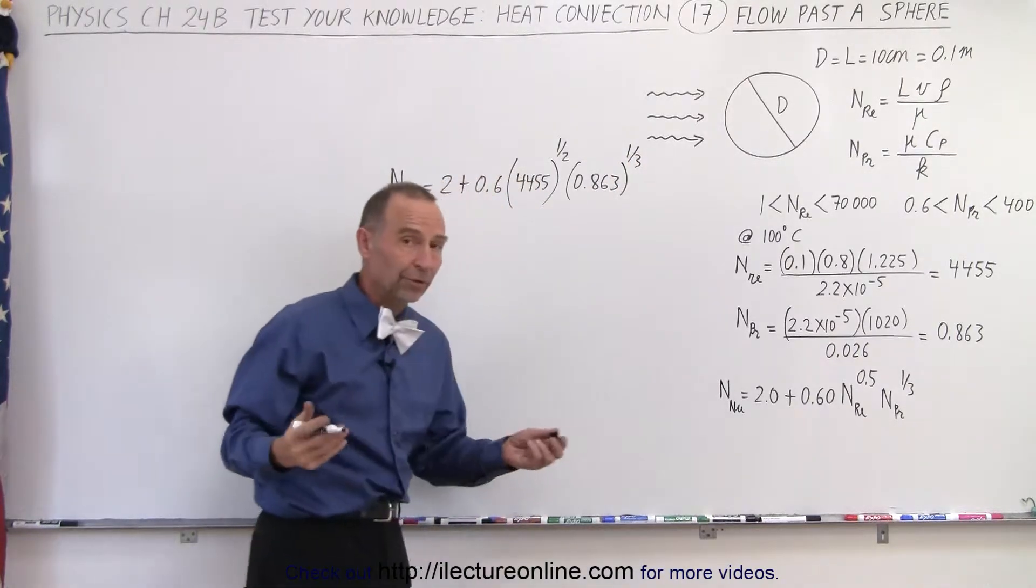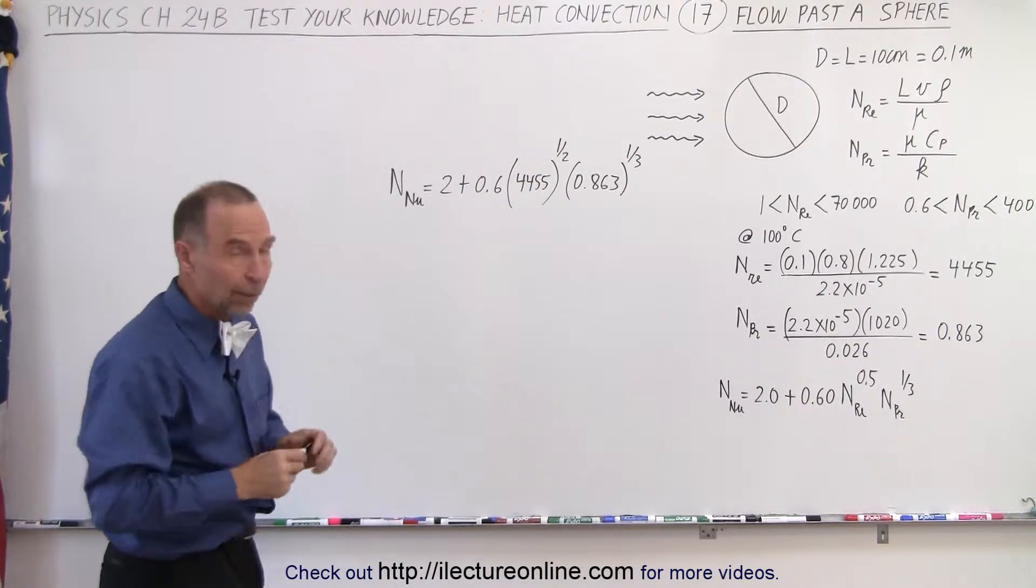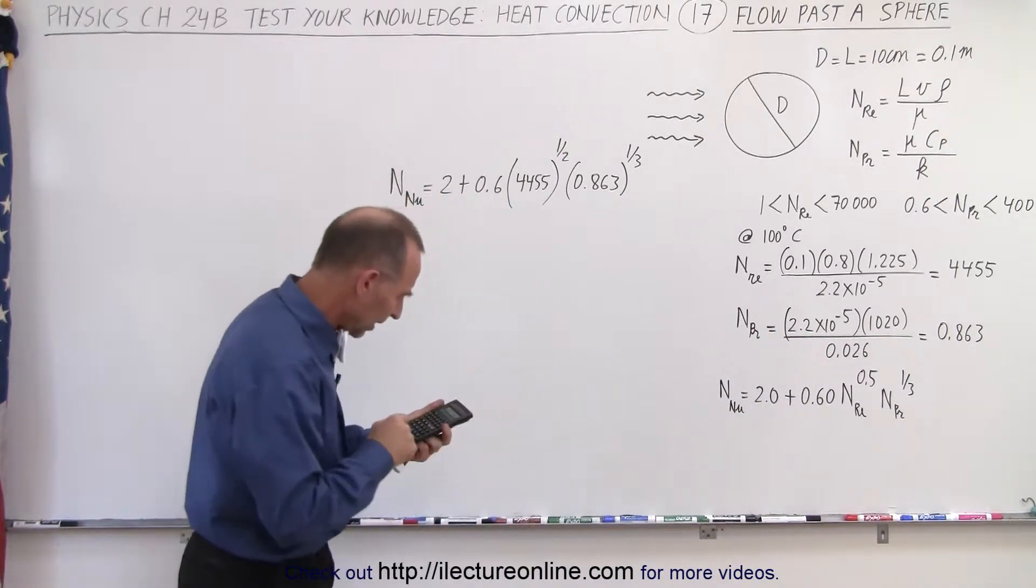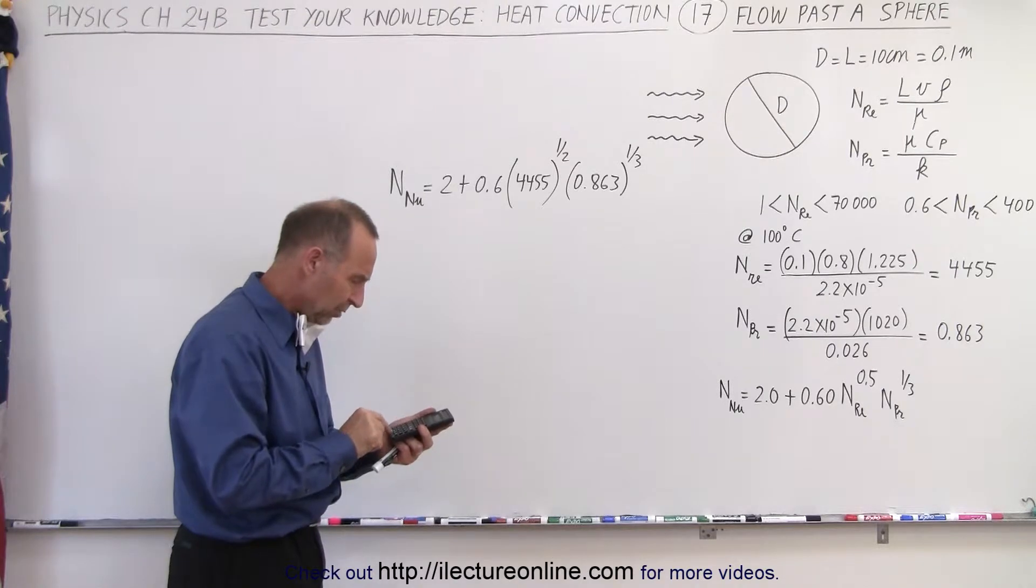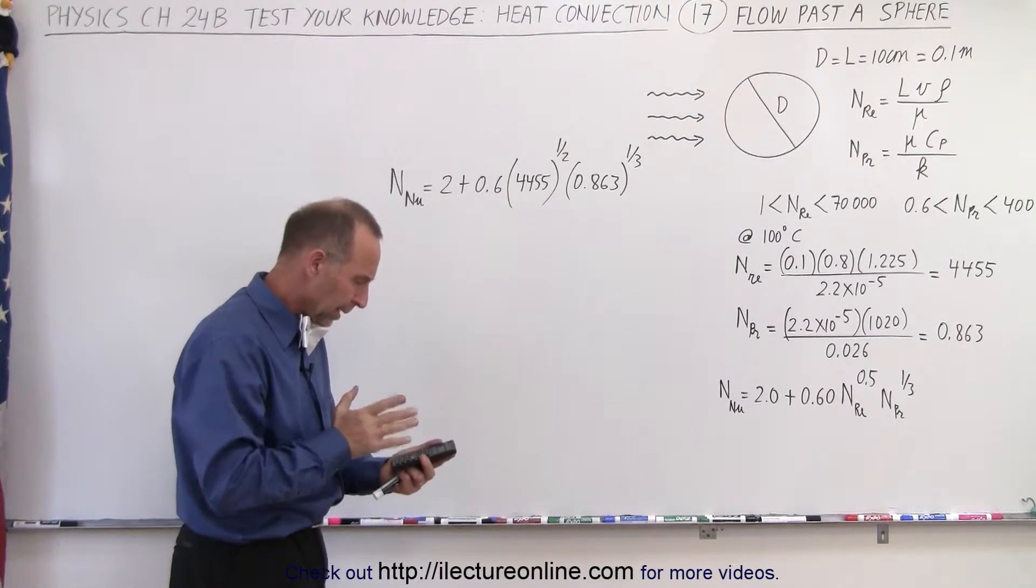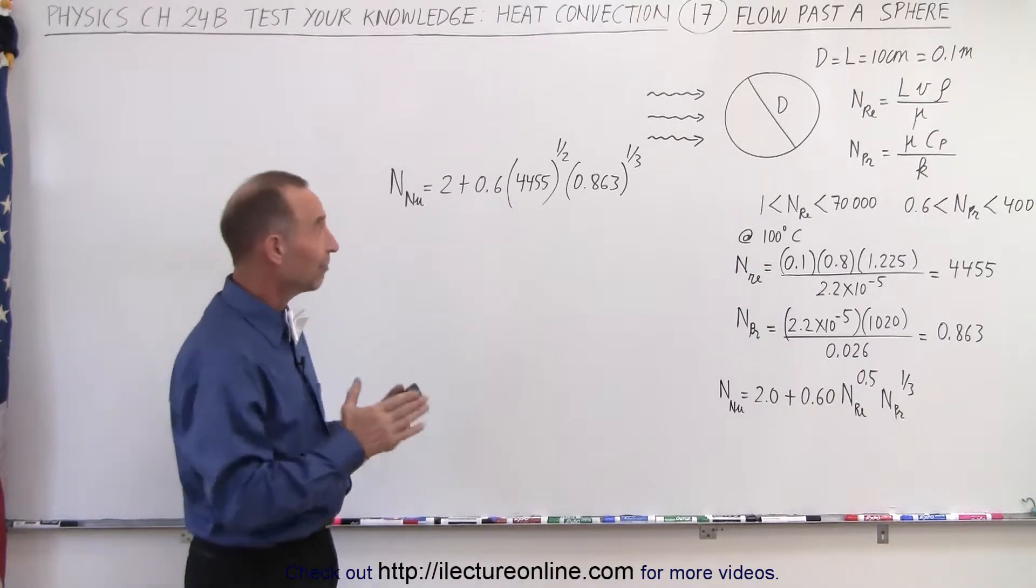Again notice that the Prandtl number raised to the one-third power will come out to something pretty close to number one as we would expect. So let's calculate that: 0.863 raised to the one-third power, and notice this 0.95, very close to one.